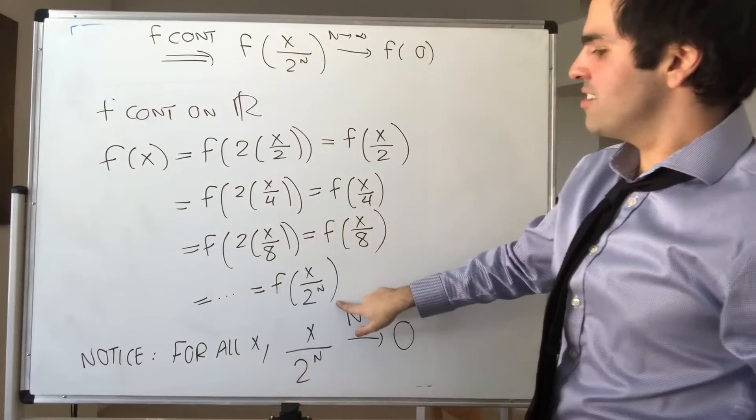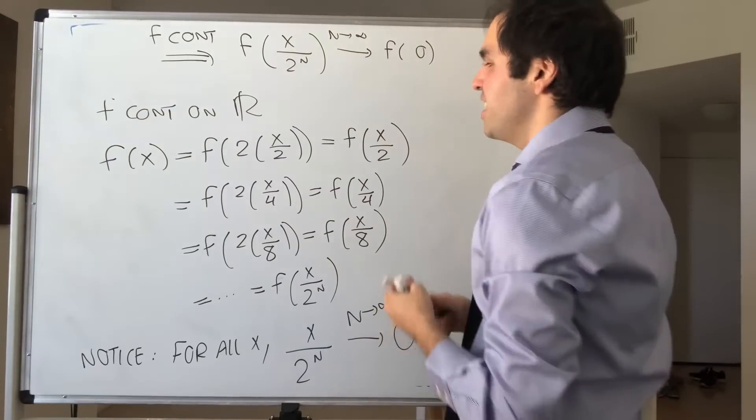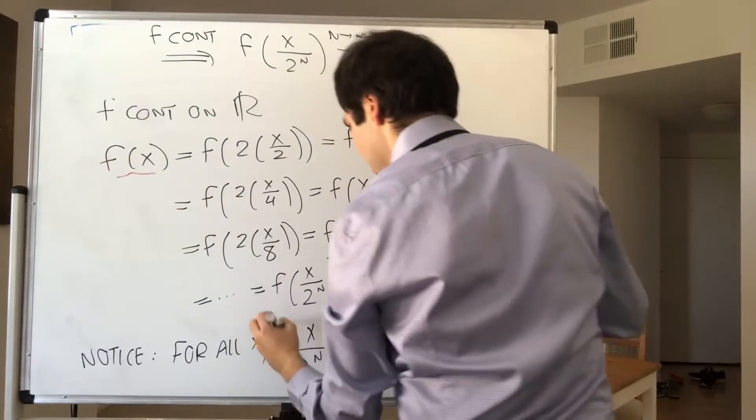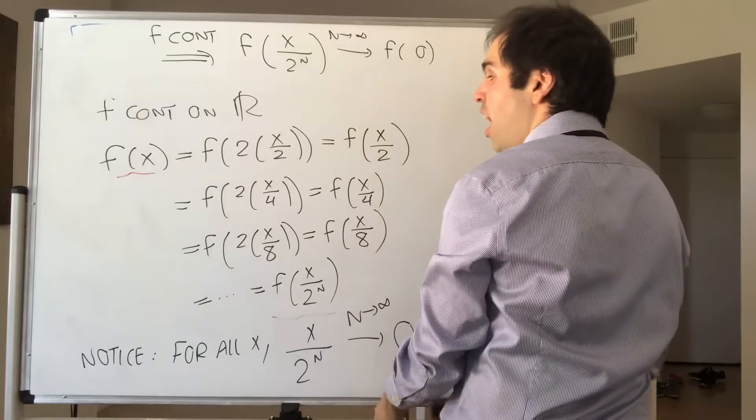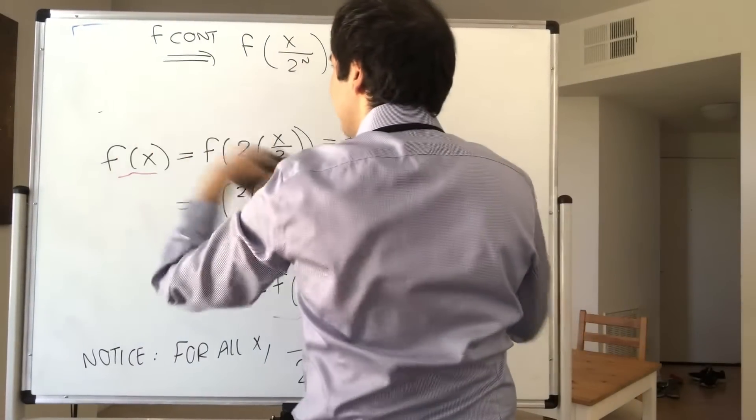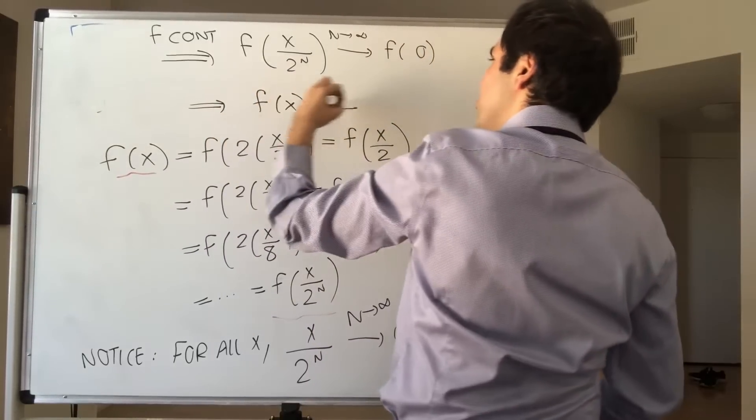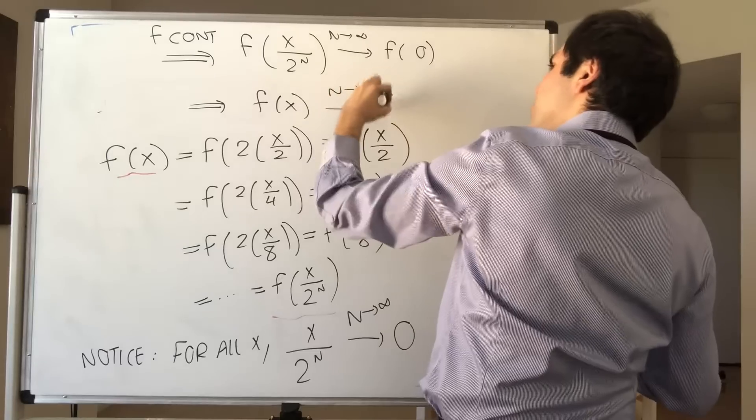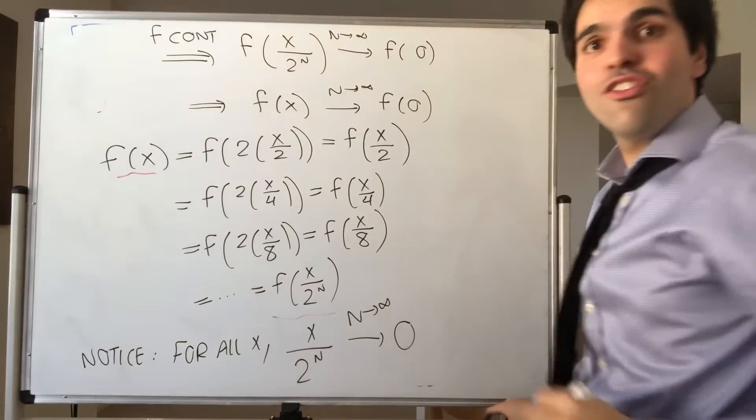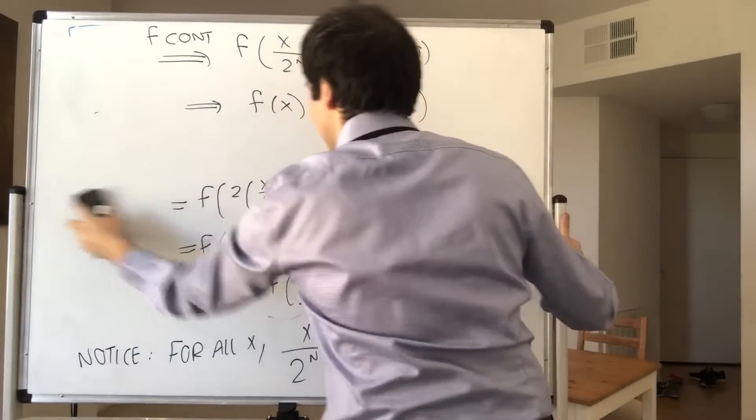However, remember, f of x over 2 to the n is the same thing as f of x. So the constant sequence f of x, as n goes to infinity, goes to f of 0. And therefore, f is just constant, equal to f of 0.